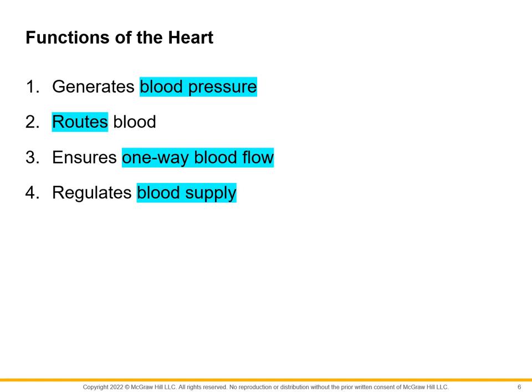Listed here are the functions of the heart. First is to generate blood pressure — our blood pressure comes from the motion of the heart, how forcefully, slowly, or fast it is pumping. Next, it routes the blood, because blood wouldn't flow through our vessels if the heart is not working. Next, it ensures a one-way blood flow — we'll understand this better when we discuss the flow of blood through the heart. Finally, it has the capability to regulate blood supply.